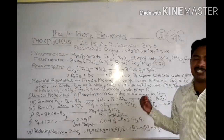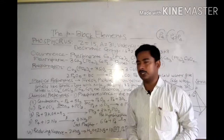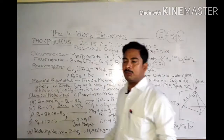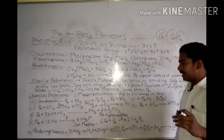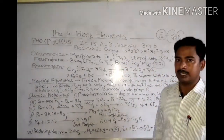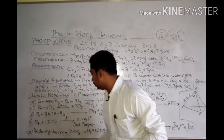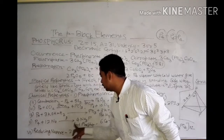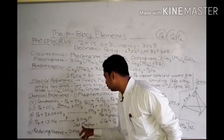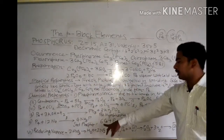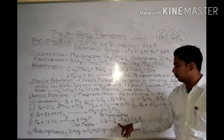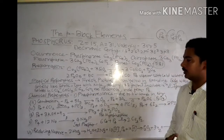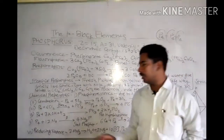With alkalis, the reaction of phosphorus gives phosphine and metal hypophosphite. With potassium hydroxide, phosphine PH3 and potassium hypophosphite KH2PO2 are produced. With sodium, sodium phosphide is formed; and with calcium, calcium phosphide Ca3P2 is formed.